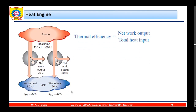For example: the first engine takes in 100 kJ and produces net work of 20 kJ, so the thermal efficiency is 20 divided by 100 = 20%, and 80 kJ is rejected to the sink. The second engine also takes 100 kJ but converts 30 kJ into net work and wastes 70 kJ, giving a thermal efficiency of 30 divided by 100 = 30%. This is how we calculate the thermal efficiency of a heat engine.